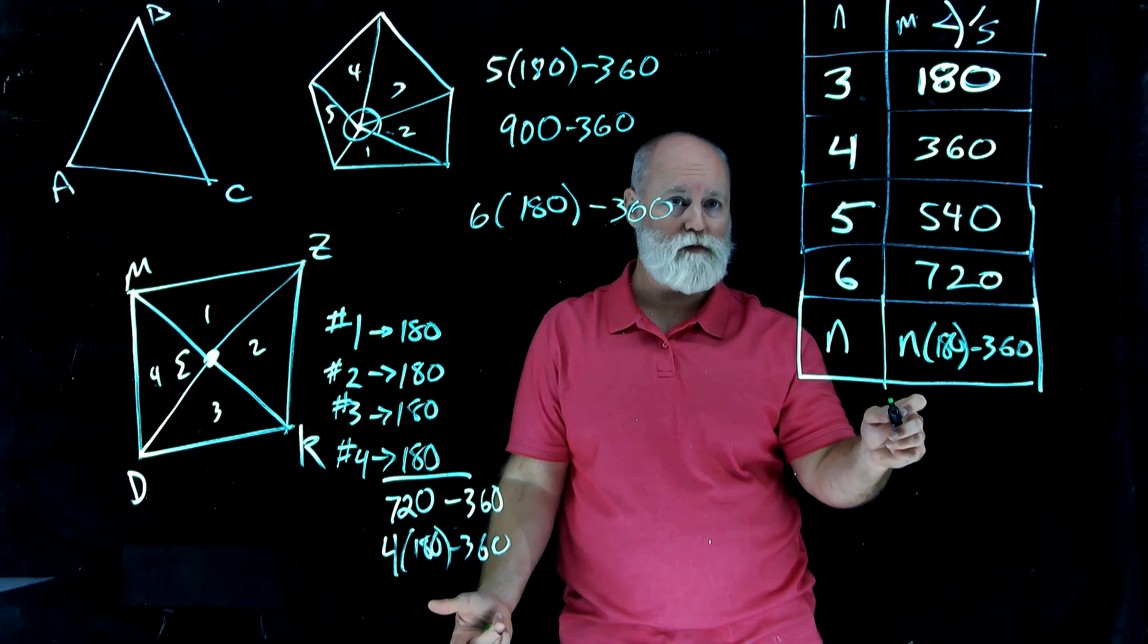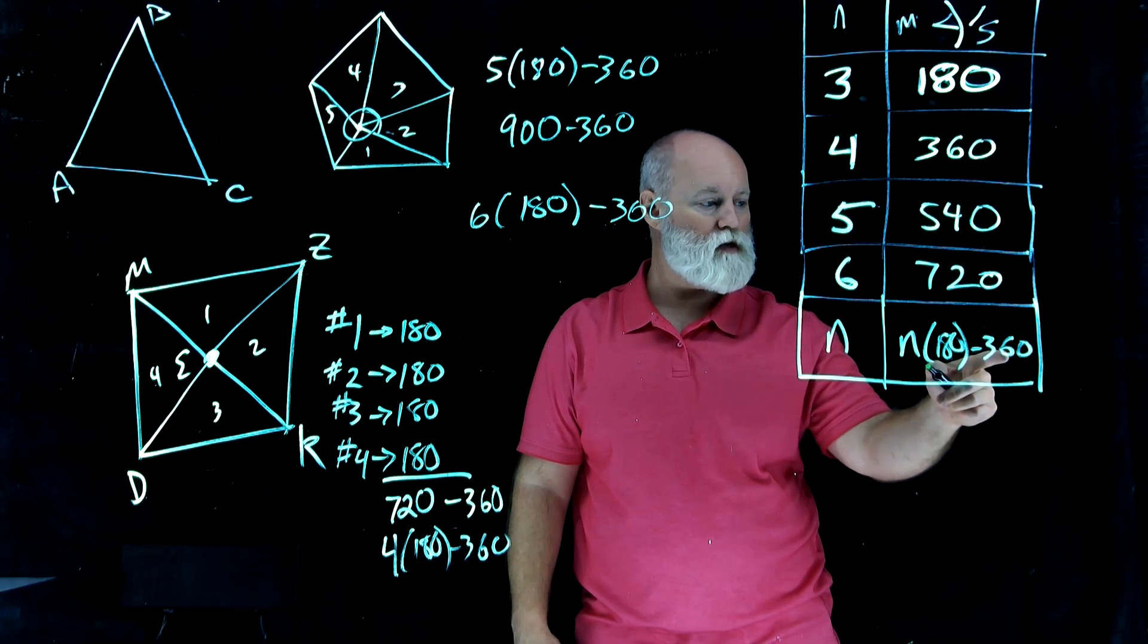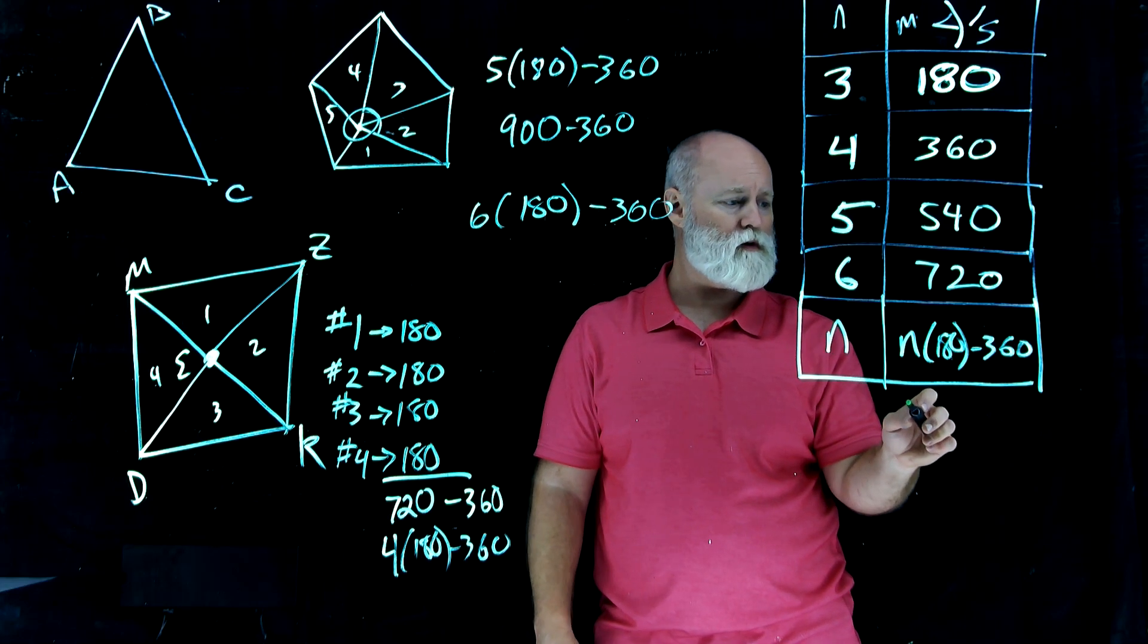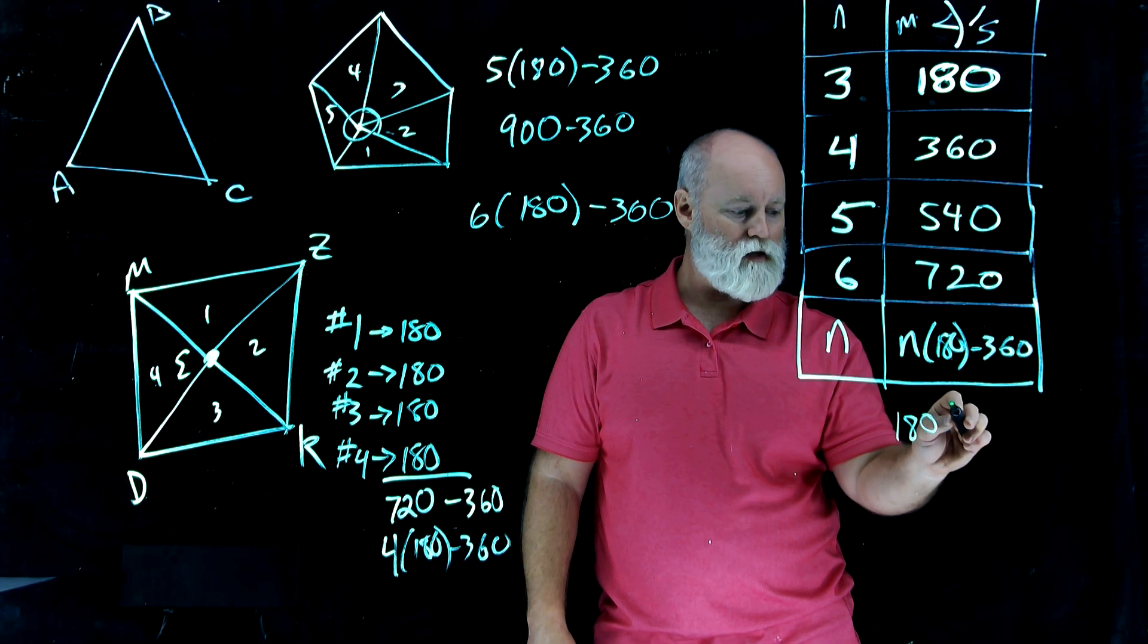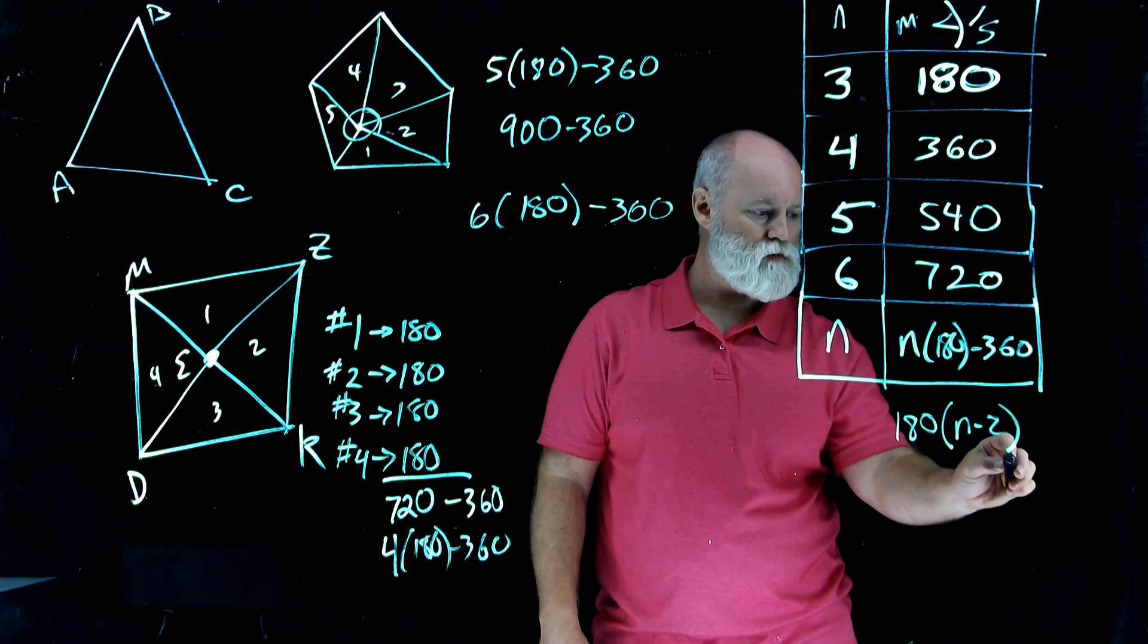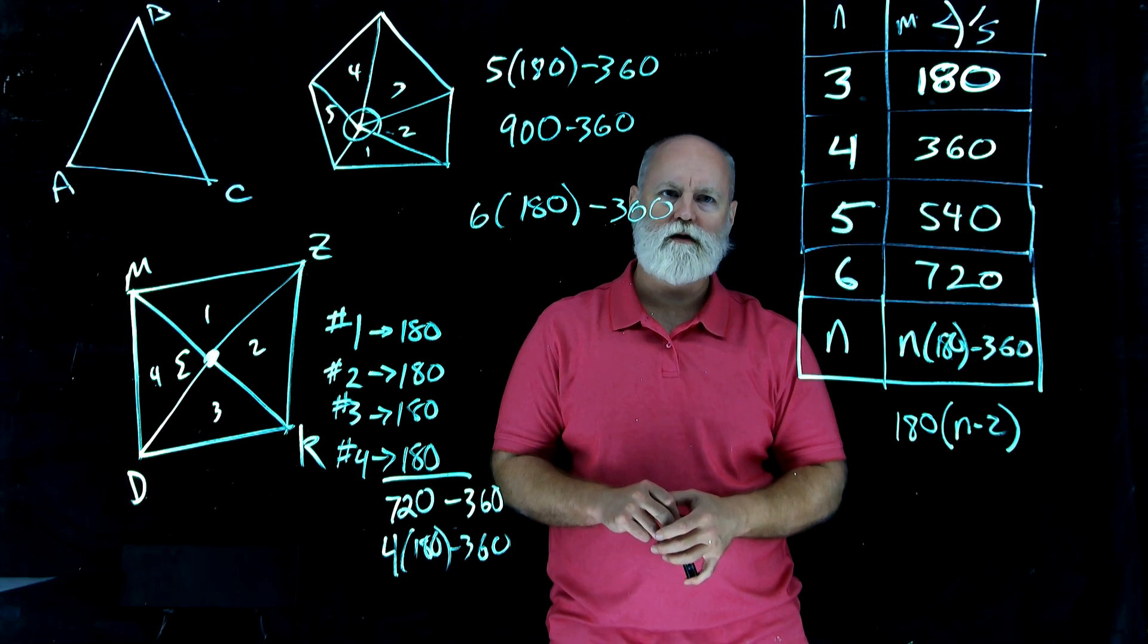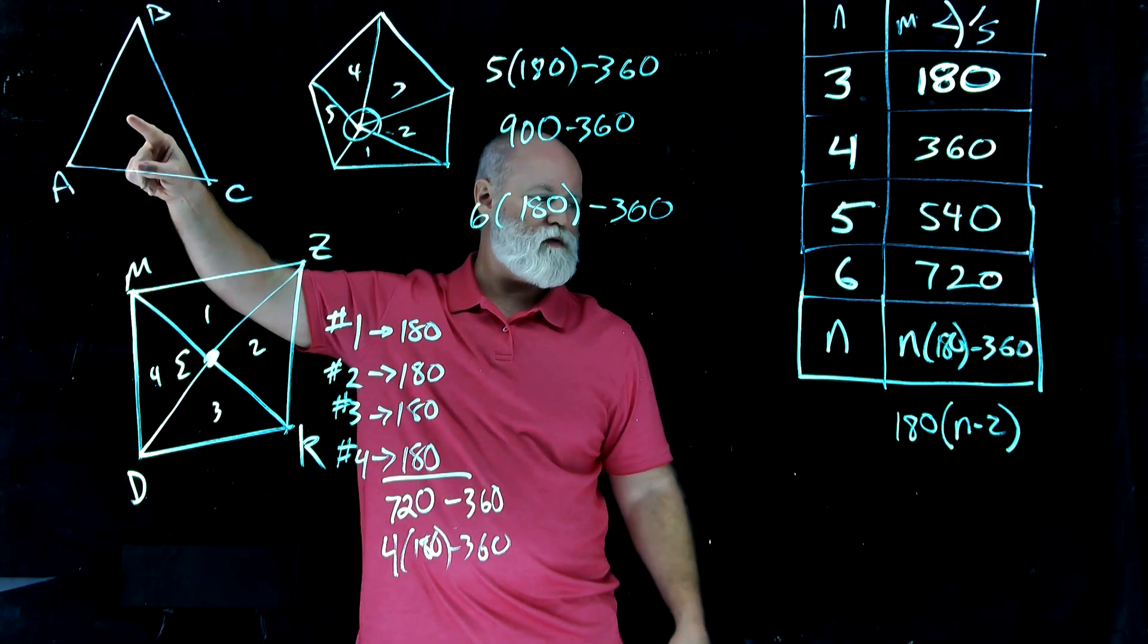Now, there's a whole other way we can write this, by the way. Notice 180 and 360. They both have 180 in them. So we could actually reverse our distributive property there by taking out a 180, and then we have N minus 2. And that's actually maybe a simpler function for us to deal with.